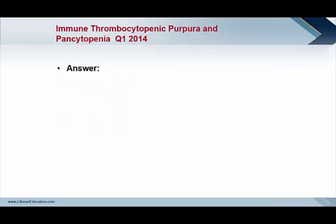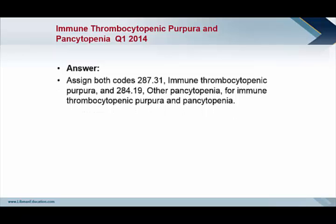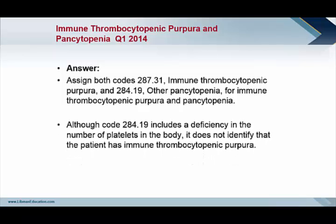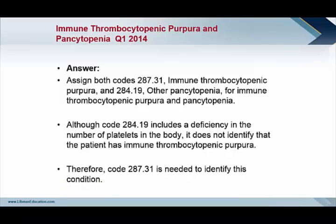In fact, the answer is a departure from that Coding Clinic in 1991. Assign both codes: 287.31 for ITP and 284.19 for other pancytopenia. Although code 284.19 includes a deficiency in the number of platelets, it does not identify that the patient has specifically immune thrombocytopenic purpura. Therefore, 287.31 in addition is needed to identify this condition.